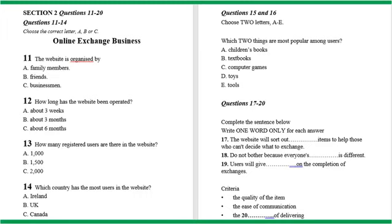In order to aid registered users in their exchanges, and to provide them with assurance, the founders recently added a new feature, whereby on completion of an exchange, users will be encouraged to provide each other with feedback. This feedback will include criteria such as the quality of the item as compared with how it was advertised, the ease of communication with the seller, the speed at which the item was delivered, and so on. The friends believe that using this method, users will have a more transparent and trustworthy bartering experience. That is the end of Section 2. You now have half a minute to check your answers.